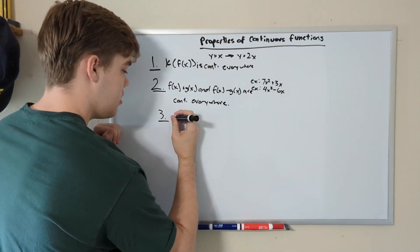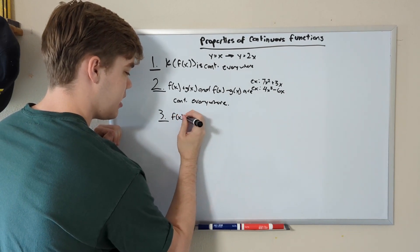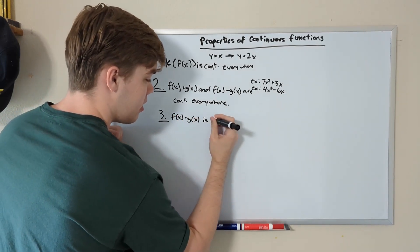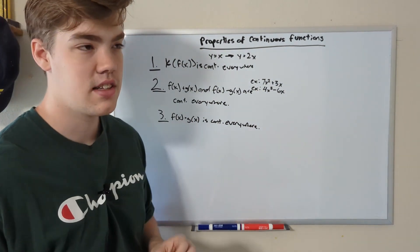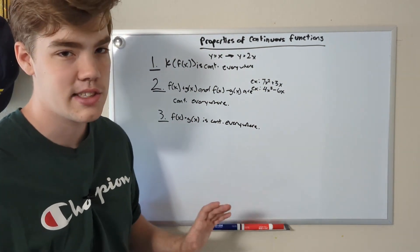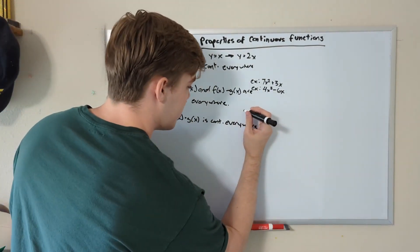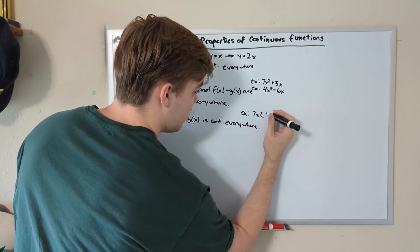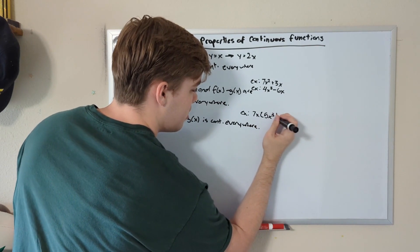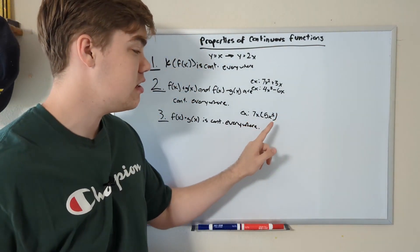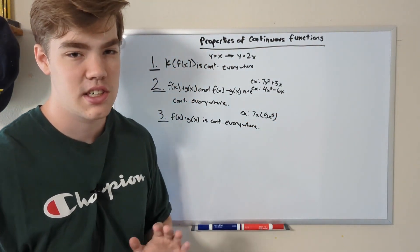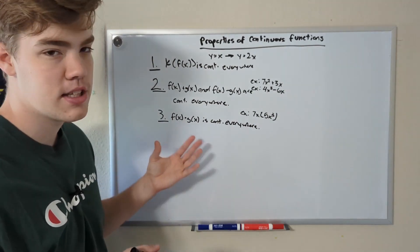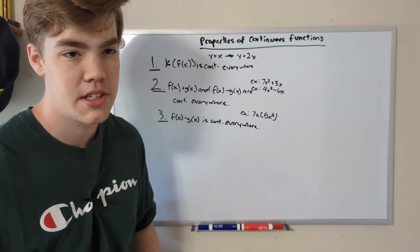Property number three: f(x) times g(x) is continuous everywhere. If we multiply two functions together, that is also continuous across the entire domain. As an example, 7x times 5x³ — despite the fact that we're manipulating these two functions by multiplication, it is still continuous everywhere.